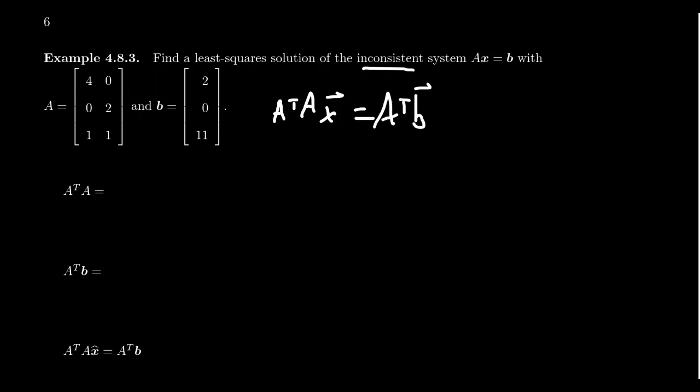So we have to first calculate A transpose A. So you're going to get 4, 0, 1, 0, 2, 1. Remember, transpose turns rows to columns. And then you get 4, 0, 0, 2, 1, 1.